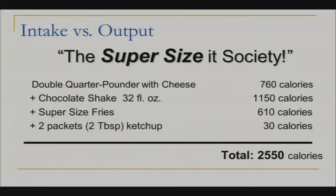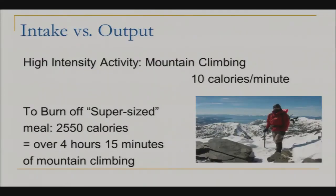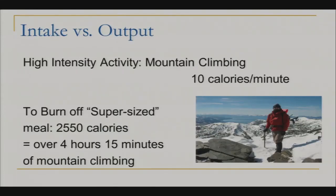It's important to understand that we can't outrun a bad diet. We have to make changes to our diet and can't just rely on physical activity. To burn a meal like that off, you would need to do high-intensity mountain climbing at 10 calories per minute for 4 hours and 15 minutes. Or if you're walking, you'd have to walk approximately 30 miles. We can't outrun that bad diet.